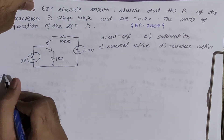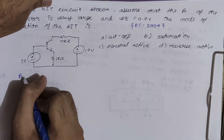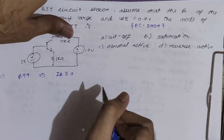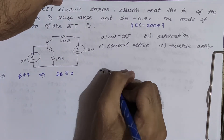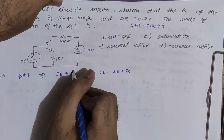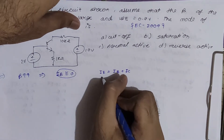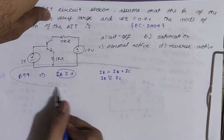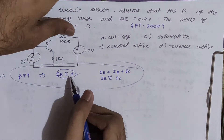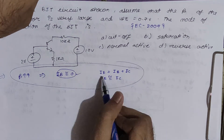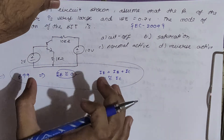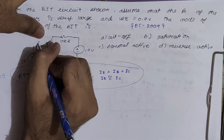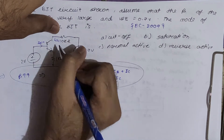Since beta is very large, IB ≈ 0. Using IE = IB + IC, since IB ≈ 0, we get IE ≈ IC. Whenever beta is very large, assume IB = 0 and directly use IE = IC.